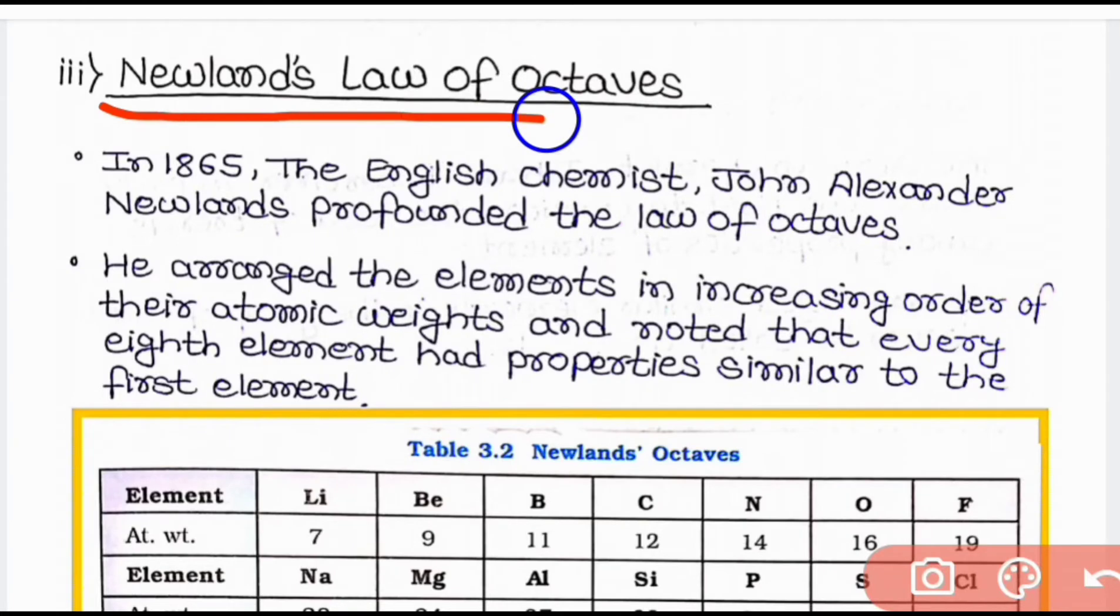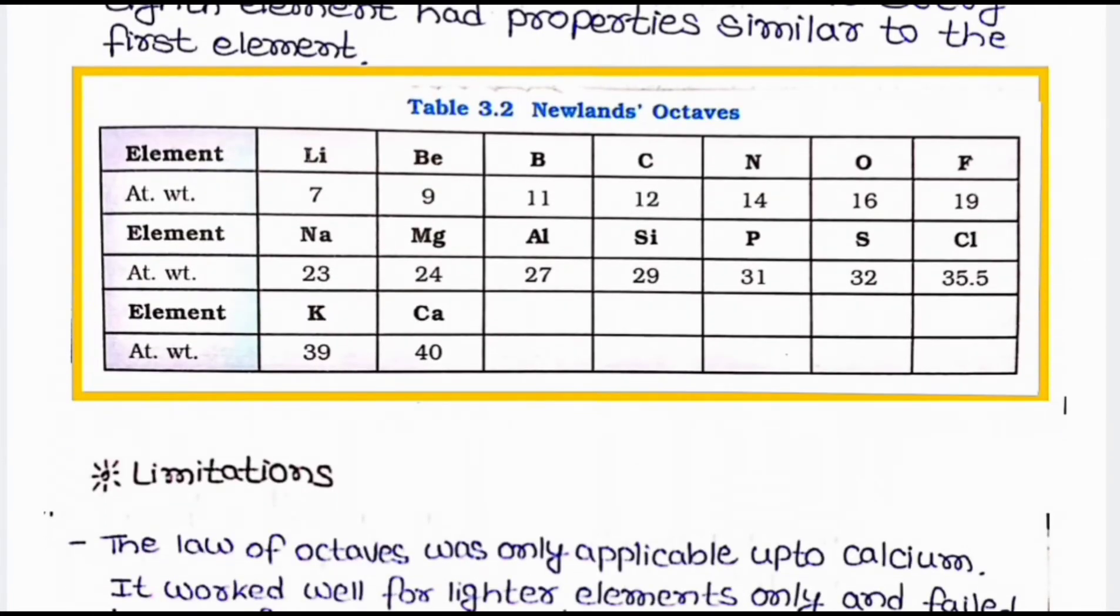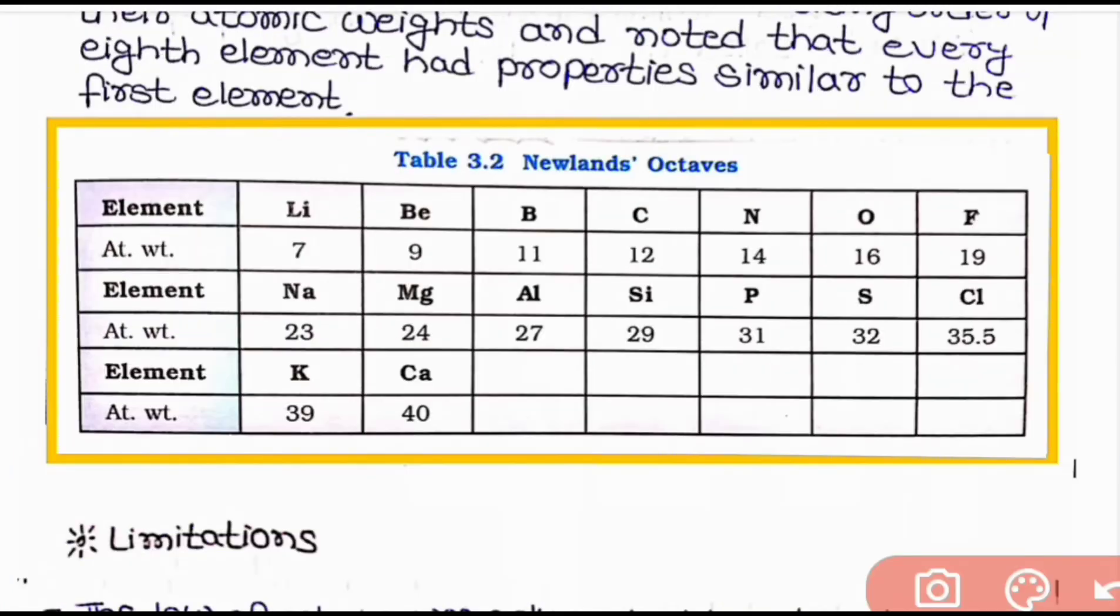Let us come to Newland's Law of Octave. In 1865, the English chemist John Alexander Newland propounded the Law of Octave. He arranged the elements in increasing order of their atomic weight and noted that every eighth element had property similar to the first element. Here is the pictorial view of Newland's Octave. And here you can see that all the elements are arranged in the increasing order of their atomic weight and every eighth element has the similar property with the first element.